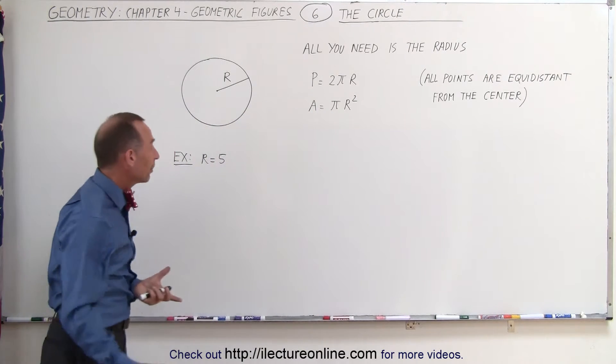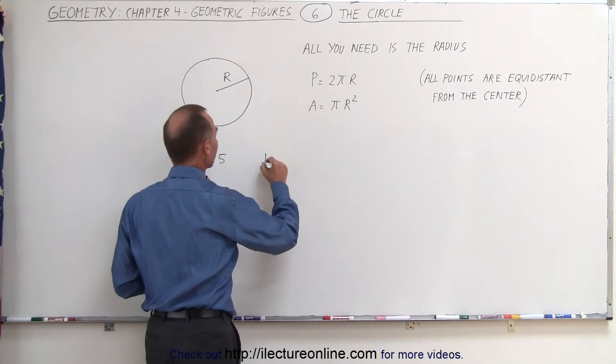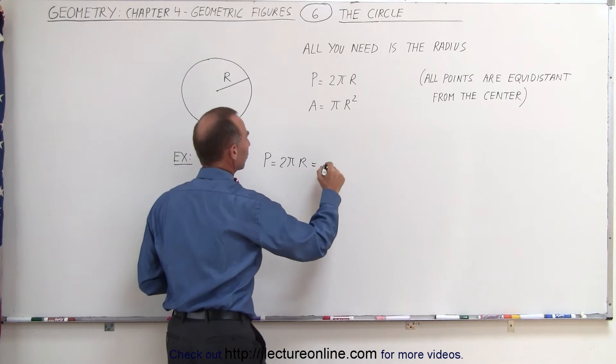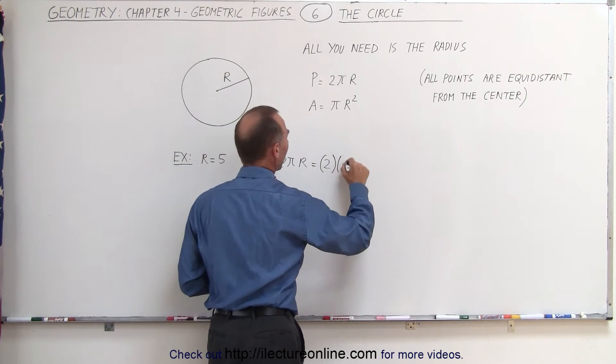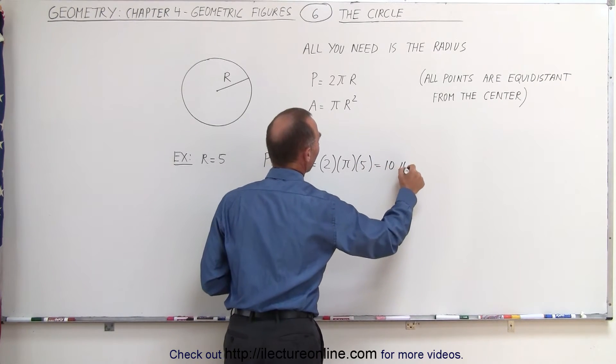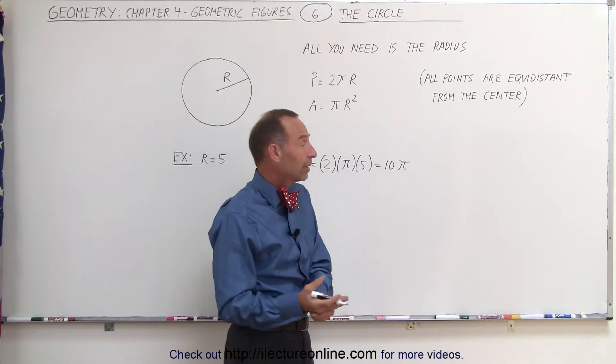So as an example, let's say that the radius is equal to 5. Then to find the perimeter we can say that P is equal to 2π times r, which is equal to 2 times π times 5, which is equal to 10π.